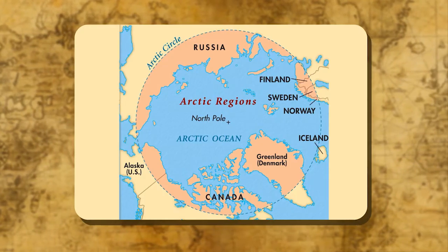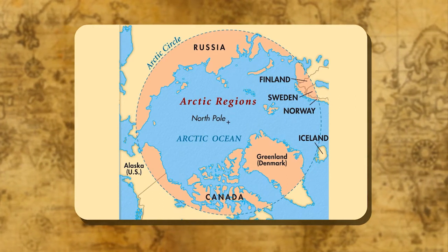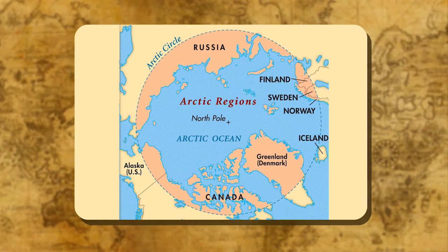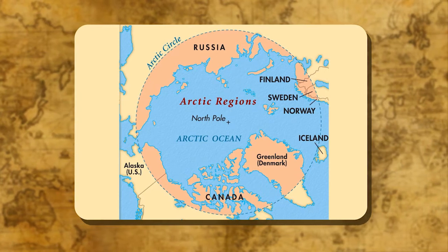Arctic Circle: The parallel of 66 and a half degrees north is called the Arctic Circle. Everywhere within this circle, there is at least one day during its summer when the sun does not set.